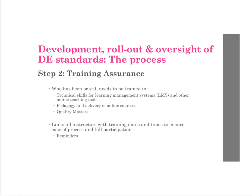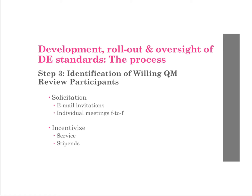Step two is training assurance — who has been or still needs to be trained. This covers technical skills such as the learning management system and third-party software like Adobe Connect, as well as pedagogy and delivery of online courses training, and Quality Matters training. I had to go through and find out what training each faculty member had and who still needed training, then link all instructors with training dates and times to ensure full participation. Proudly, our college has a very high rate of training — about 95% for Quality Matters and in the high 80s for pedagogy and delivery.